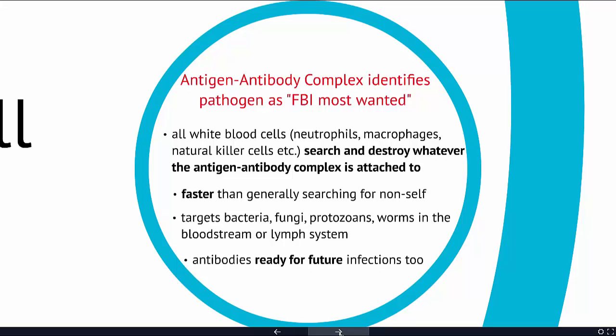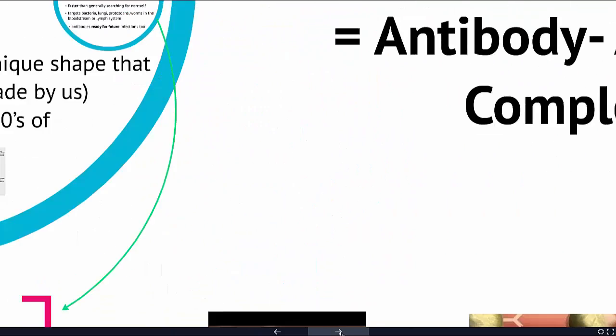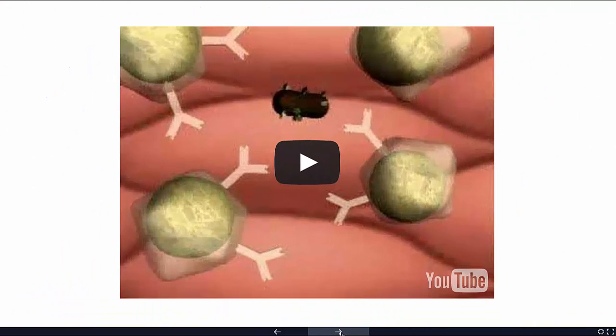Once you've made an antibody, you're ready for future infections as well. Once B cells have created a particular antibody that works, they go through clonal selection — making more B cells ready to produce that antibody if that pathogen ever appears again. The next two videos will show how clonal selection works, how antibodies are produced, and how that triggers the immune system to fight any pathogen using the antigen-antibody complex.